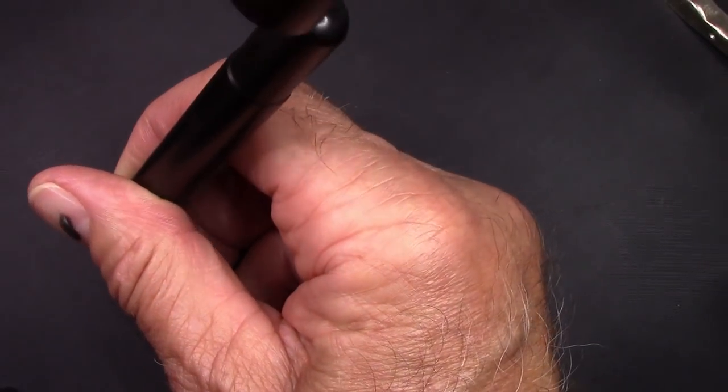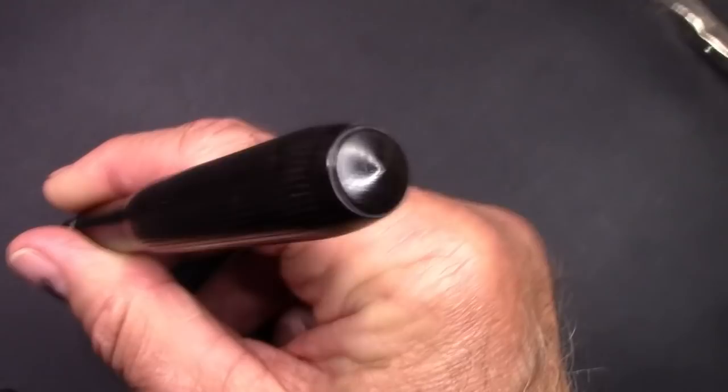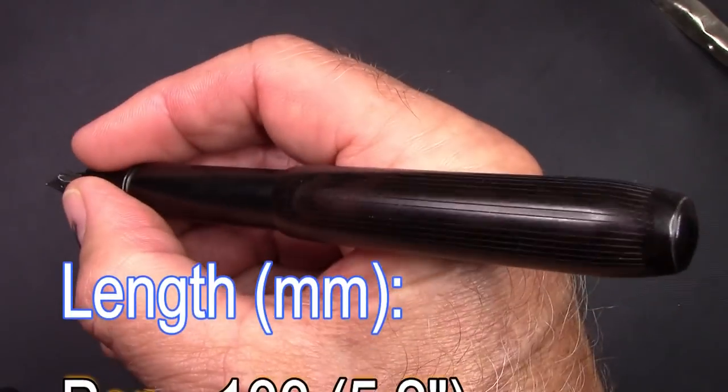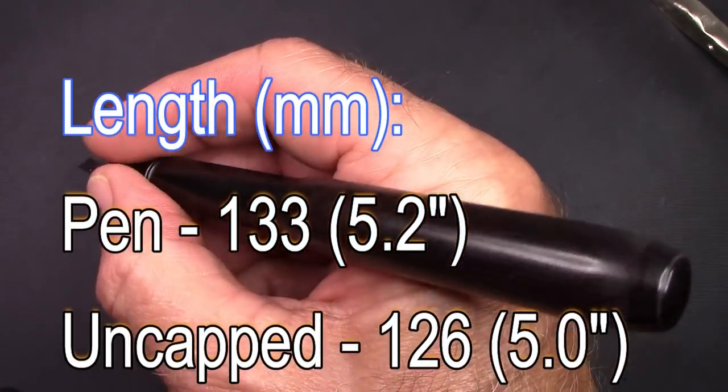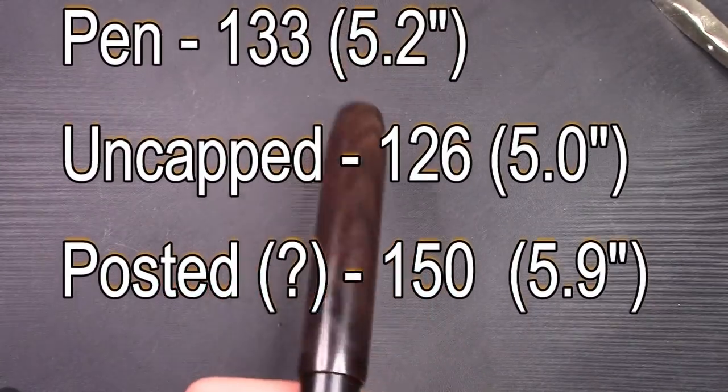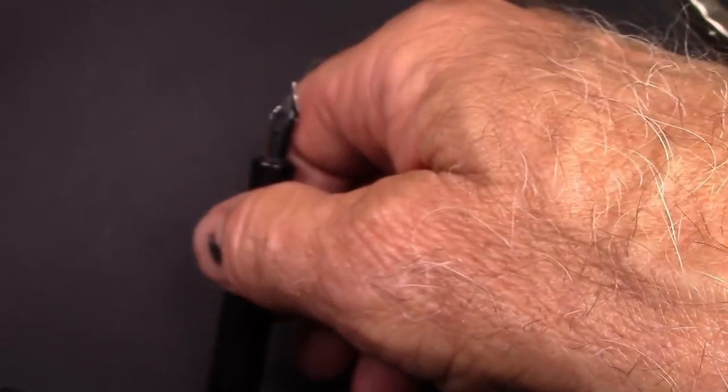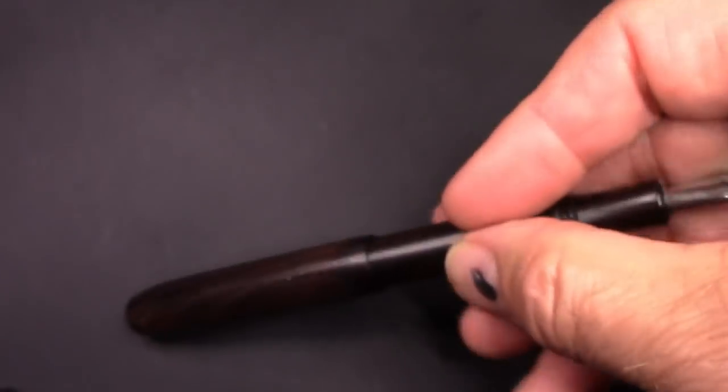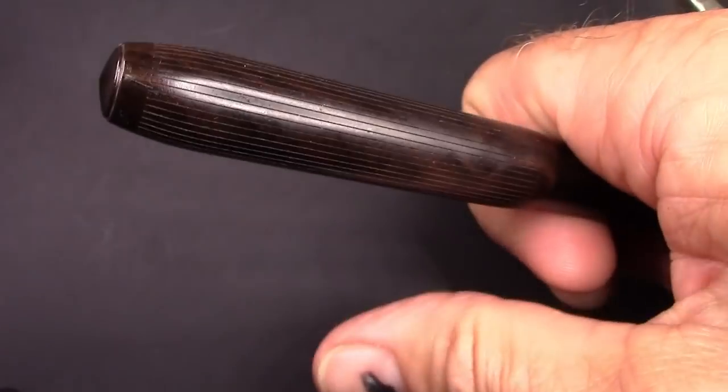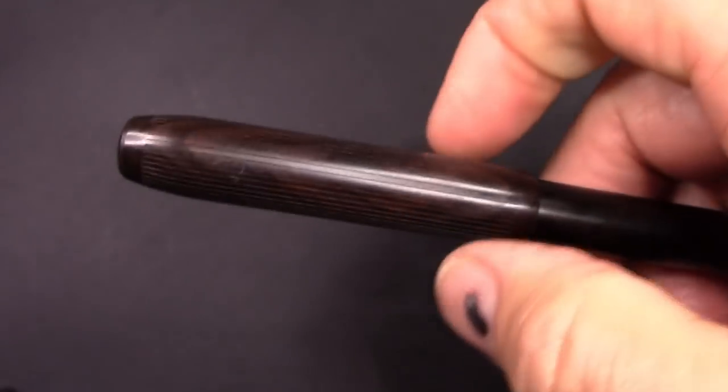It looks like it would post and the cap does fit there and it makes for a proper length pen but it does not stay. The cap just slides off. There's no way to actually post it in the way that the cap is machined on the inside so you could use it as a spinner if that was your liking.